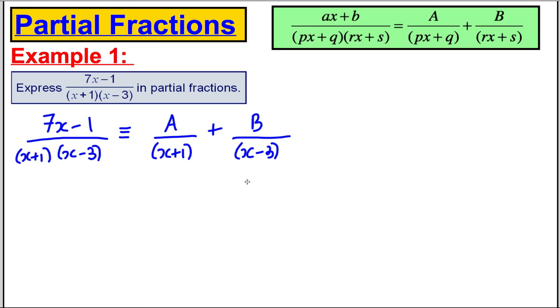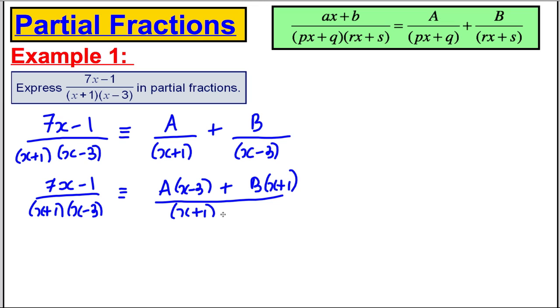Now if we were to make this side have a common denominator, we would say that 7x subtract 1 over (x+1)(x-3) would therefore be identical to A(x-3) + B(x+1). Now the denominators are identical to each other, so this tells us that 7x subtract 1 must be identical to A(x-3) + B(x+1). The tops must be equal.